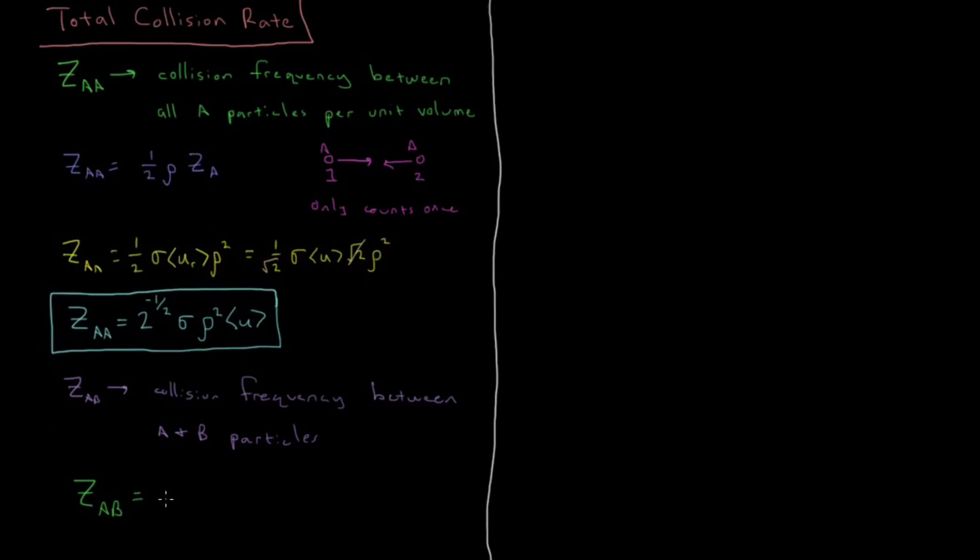So effectively what you get at the end is you have cross sectional area between A and B times density of A times density of B times the relative velocity of A and B to one another.